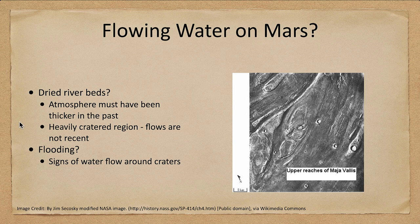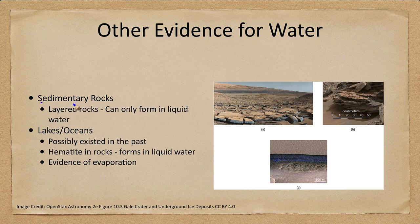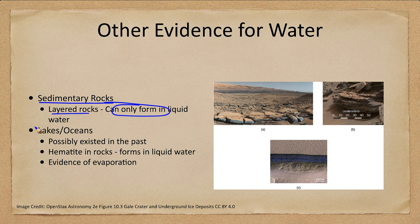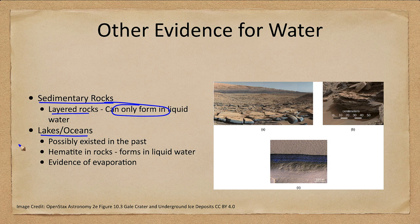What other evidence do we have for water? We have sedimentary rocks found by some of the rovers. Sedimentary rocks are layered rocks that can only form in liquid water. We see these on no other place in the solar system other than Earth and Mars, meaning that at one point Mars did have ancient lakes and possibly oceans — perhaps not as deep as Earth's oceans, but possibly covering large portions of Mars's surface to a depth of even a couple of meters.